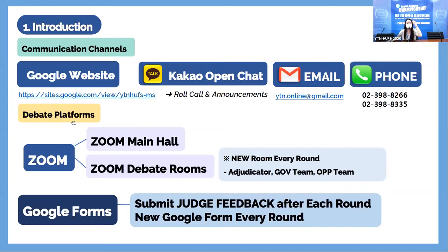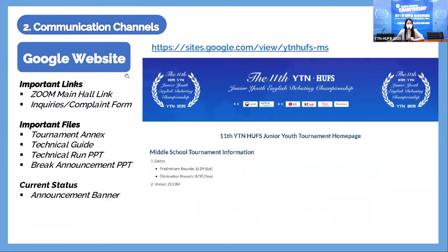There are several debate platforms we use. We're going to use Zoom — there is a Zoom main hall and Zoom debate halls. The Zoom main hall is where there will be announcements, and there will be individual Zoom debate rooms with new rooms every round. In one debate room there will be an adjudicator, one government team, and one opposition team. After finishing your debate, you'll go to Google Forms to submit a judge feedback form after each round — a new form link will be uploaded on the Kakaotalk open chat.